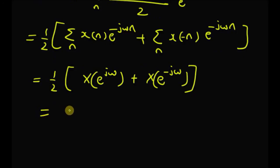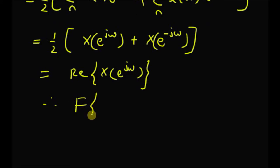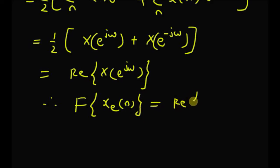This equals the real part of X(e^{jω}), because the imaginary component of X(e^{jω}) cancels with the imaginary component of X(e^{−jω}). Therefore, the DTFT of the even component of the signal is equal to the real part of X(e^{jω}), the original DTFT.